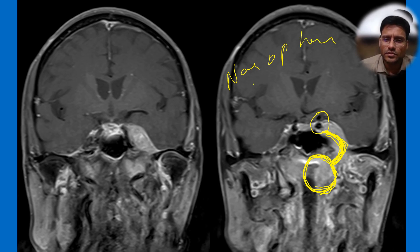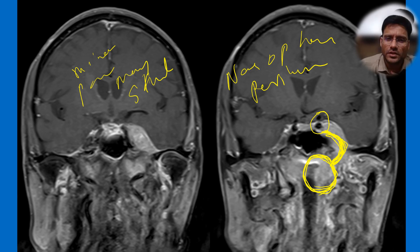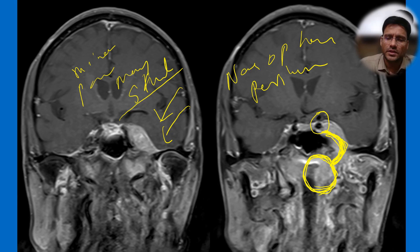Perineural spread is common with minor salivary gland tumors, parotid carcinomas, and many head and neck carcinomas that spread through skull base foramina. As a radiologist, you should always look at the skull base foramina before making a diagnosis. If you see a mass in the head and neck region in an elderly male, always look at the basal cuts to determine whether it is a contiguous mass or a separate mass.